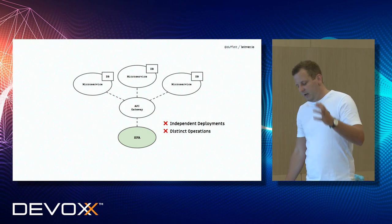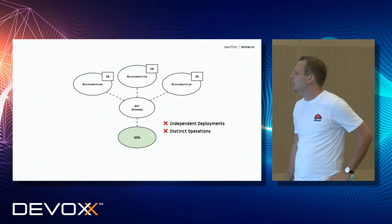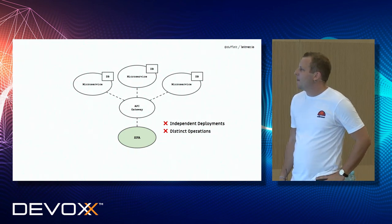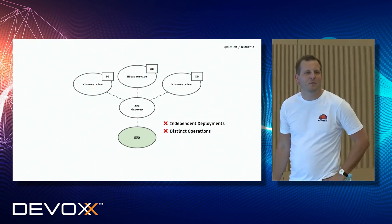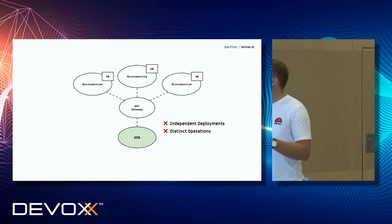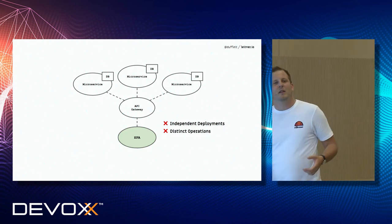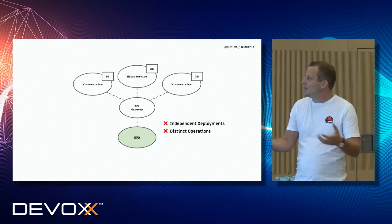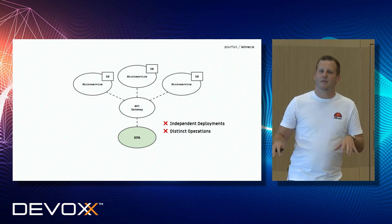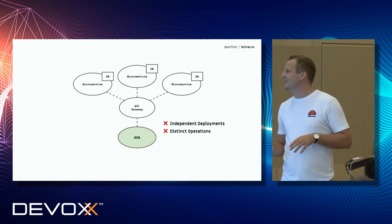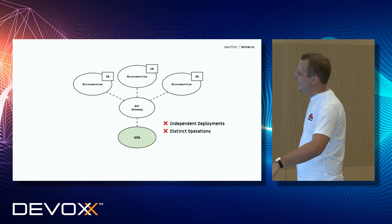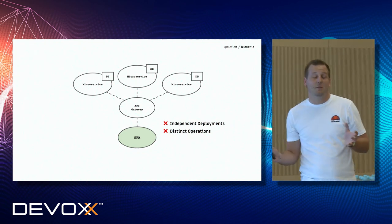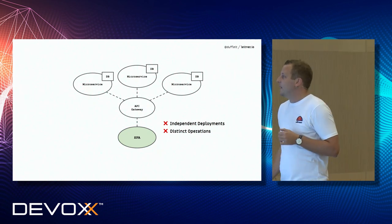We do not have distinct operations, and mainly in JavaScript this can be an issue. I came from a Java backend area, and even working with JavaScript now, I can tell you it's quite easy to do something wrong in JavaScript, even if you use TypeScript and similar tools. If you have one big single-page application and you fail somewhere, the chances are quite high that your whole application will fail at the front end.